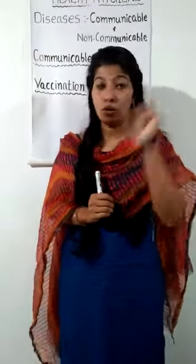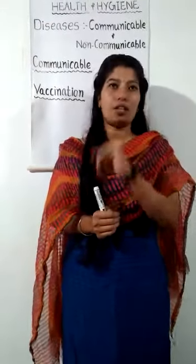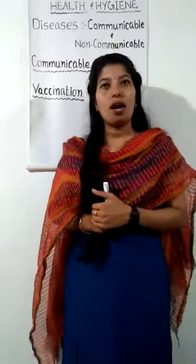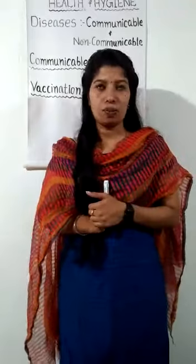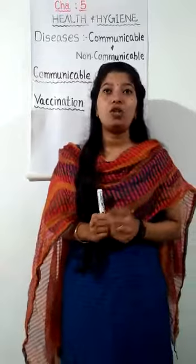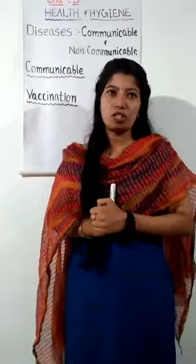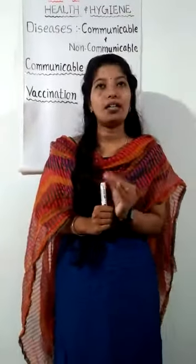Eat cooked food and keep it covered so that flies do not sit on it. Water should not be stagnant anywhere around the house as it can lead to breeding of mosquitoes. Drains must be kept covered. It is also possible to prevent many diseases through vaccination. Most vaccines are given to children when they are young.